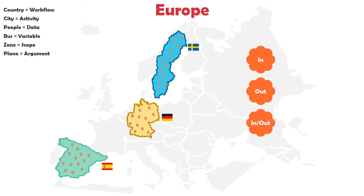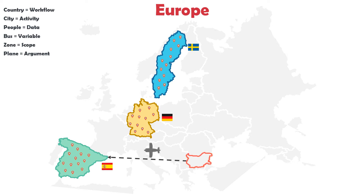Let's talk about these three directions with examples. The first one is In. Assume the main workflow is Europe and Spain is a workflow. People want to travel from a country in Europe to Spain, which means we invoke the Spain workflow in the main workflow. For passing data between workflows we need arguments — the plane arrives in Spain, therefore the direction is In. What matters is where the plane arrives, not where it flies from. This means we define an argument in the Spain workflow which has the In direction.